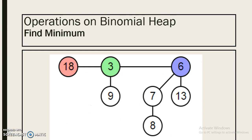The next operation is find minimum operation. To find minimum, we just have to travel through root nodes for all the trees. Now for this example, we will start from the first tree and we will see its root node.